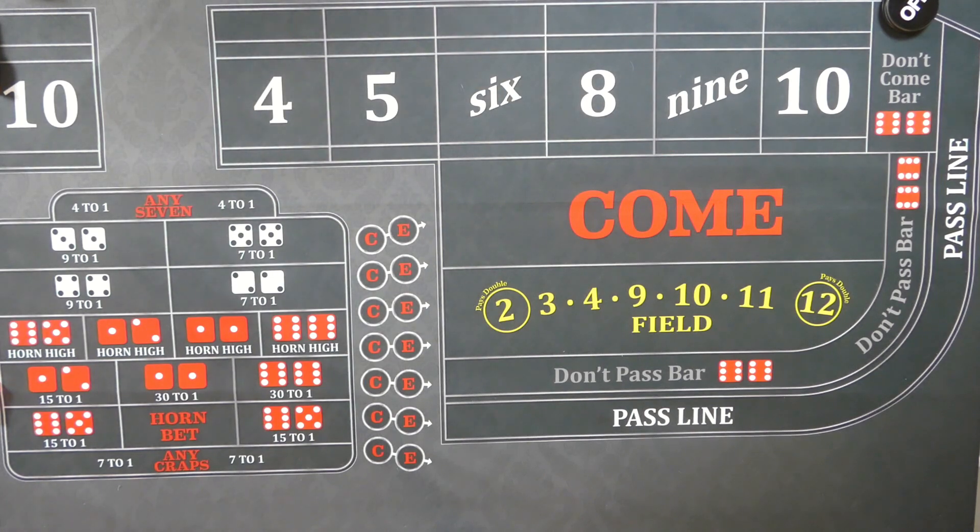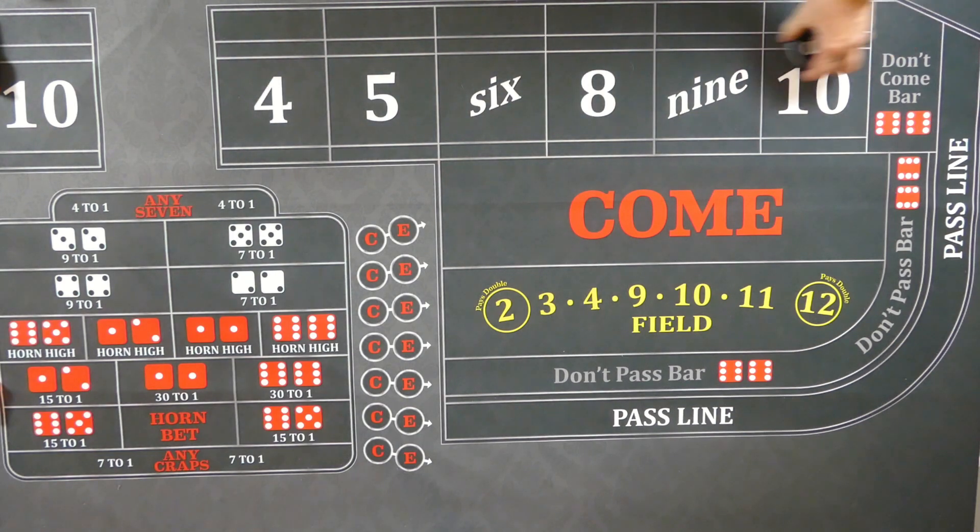So this strategy comes from Eric, and Eric has an interesting strategy he calls the poor man's power press, and it's definitely interesting. Like any strategy, it is looking for repeaters. All strategies are looking for repeaters. They're looking for numbers to roll multiple times. That's how you make your money, but he has an interesting way of doing it.